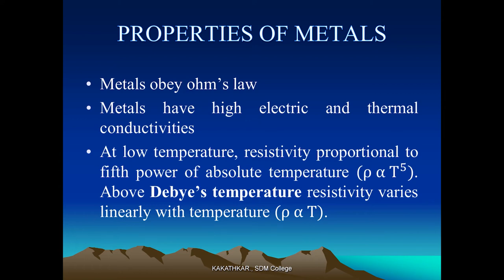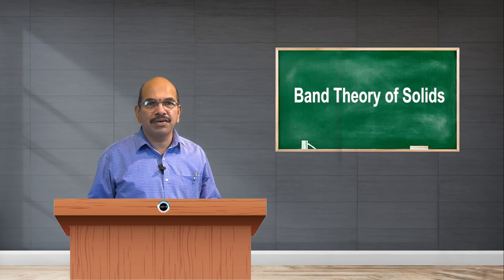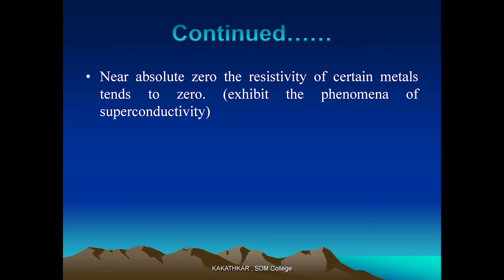Near absolute zero, the resistivity of certain metals tends to zero. If you reduce the temperature of a metal, its resistance decreases with decreasing temperature. At very low temperatures, certain materials show a special characteristic known as superconductivity — the zero resistance condition — which happens at temperatures very close to absolute zero.